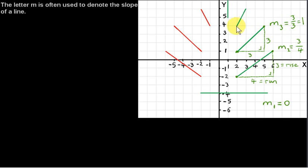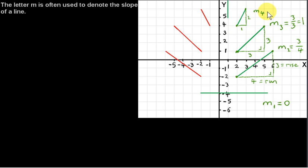For this line here, we look at these two points on the line. The horizontal distance between them is one unit. The vertical distance between them is two units. So if I call the slope of this line M4, we see that M4 is rise over run — two over one — which is two.